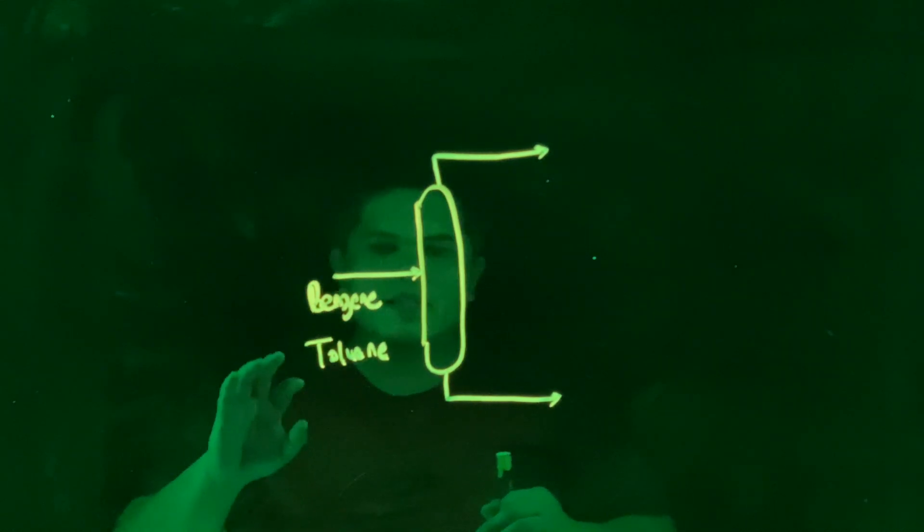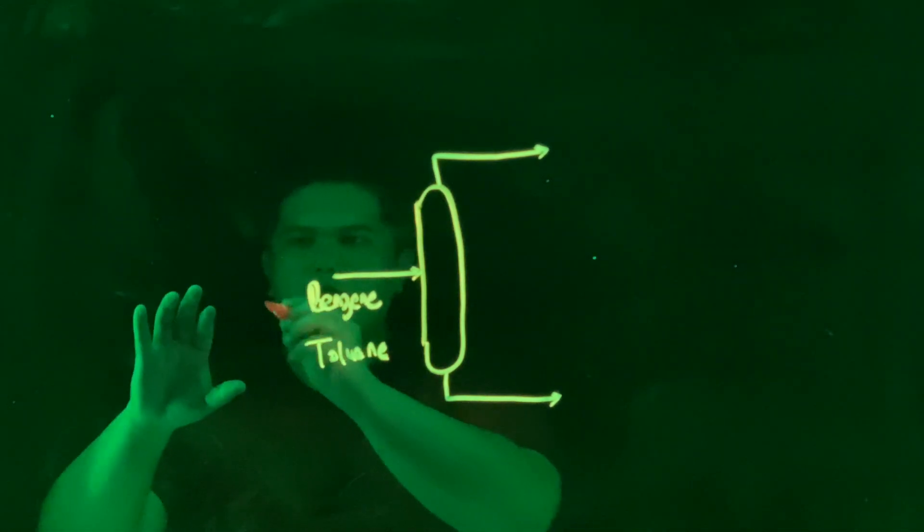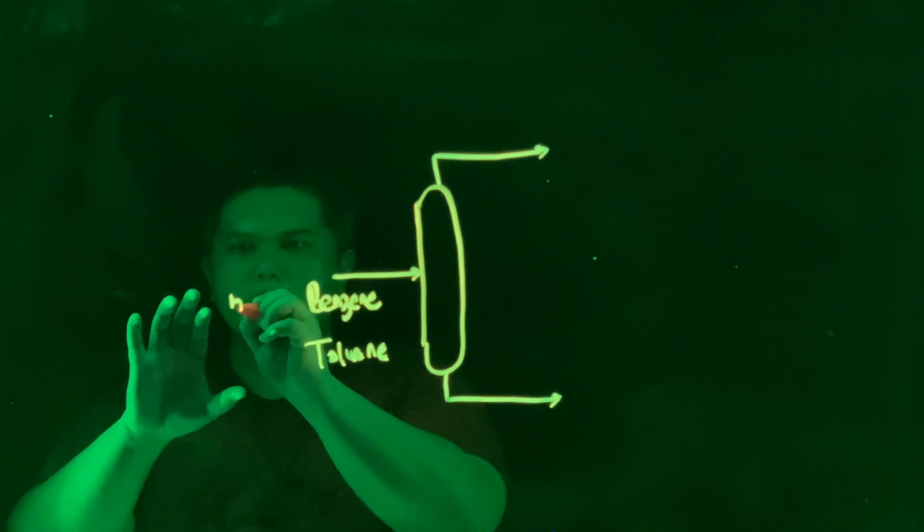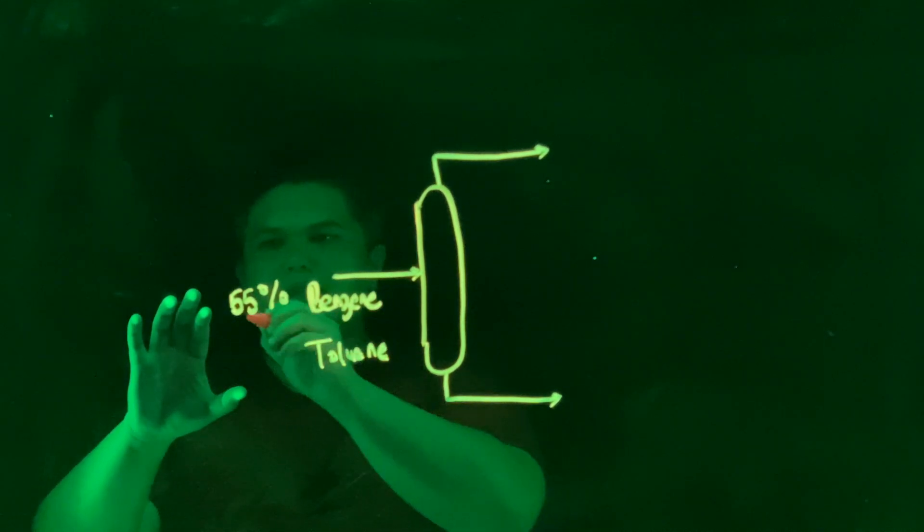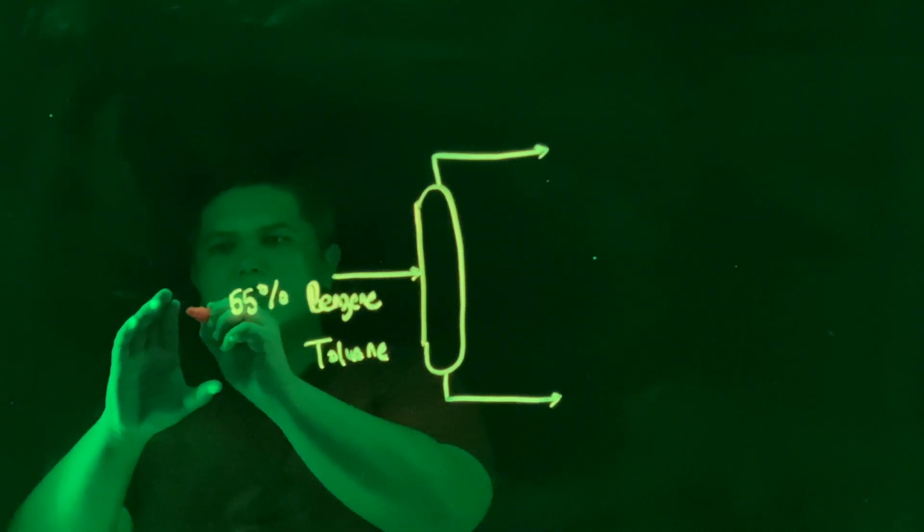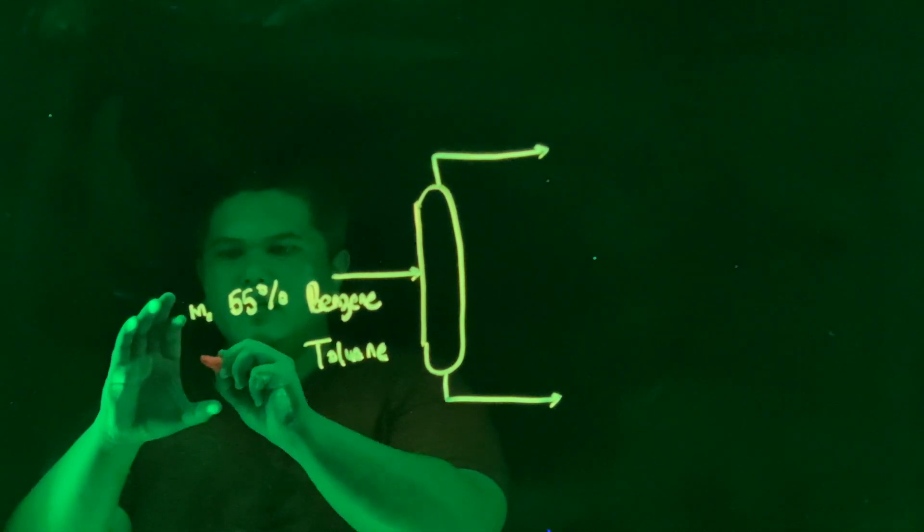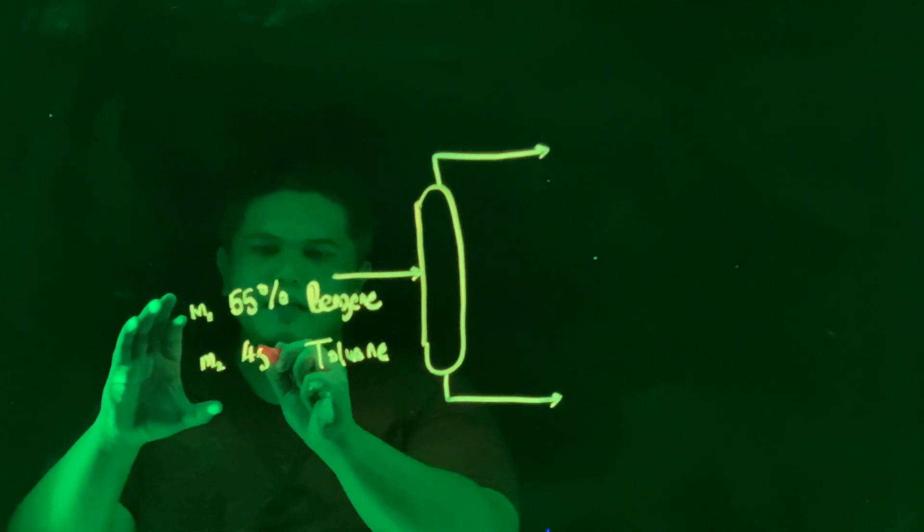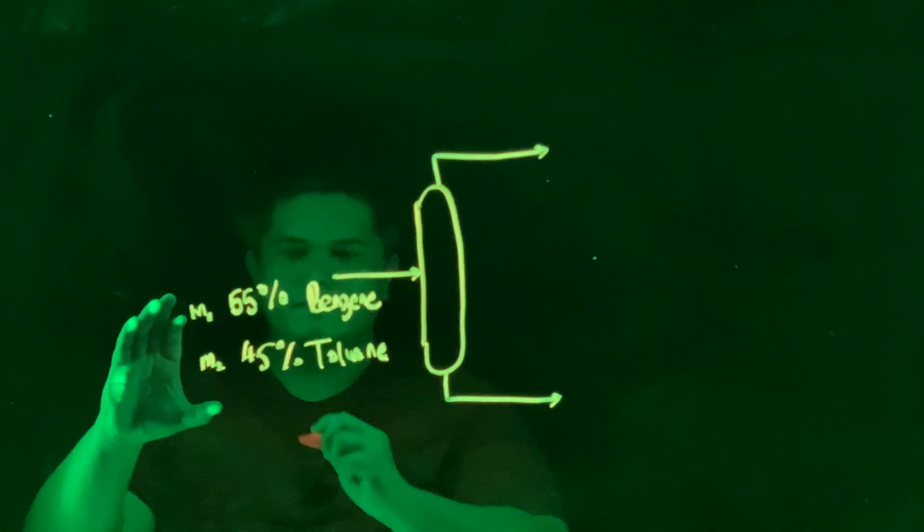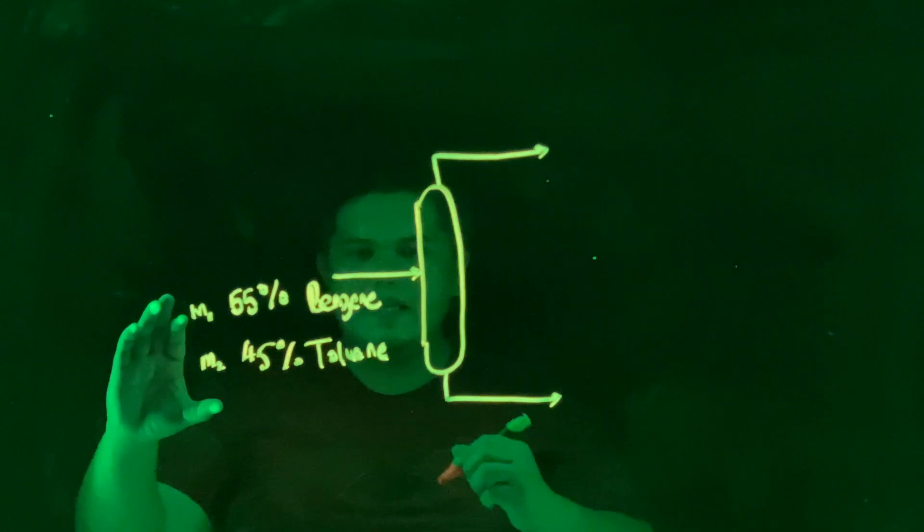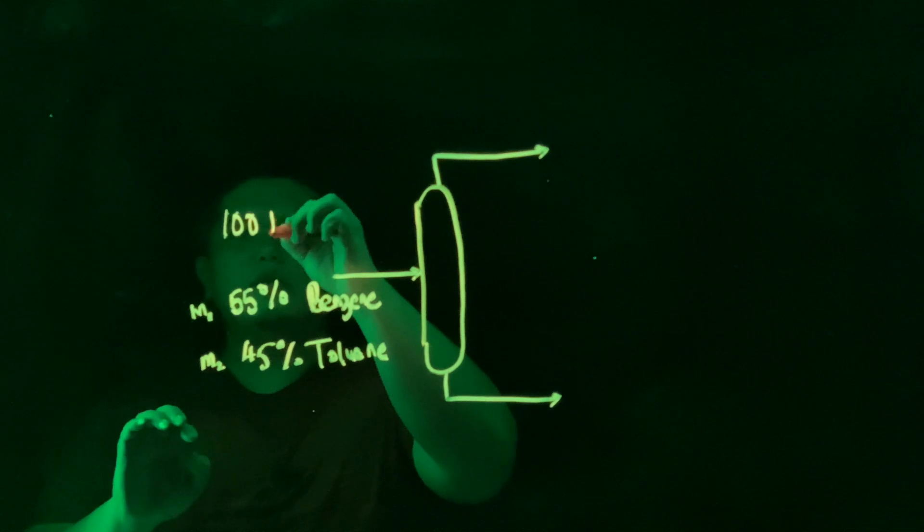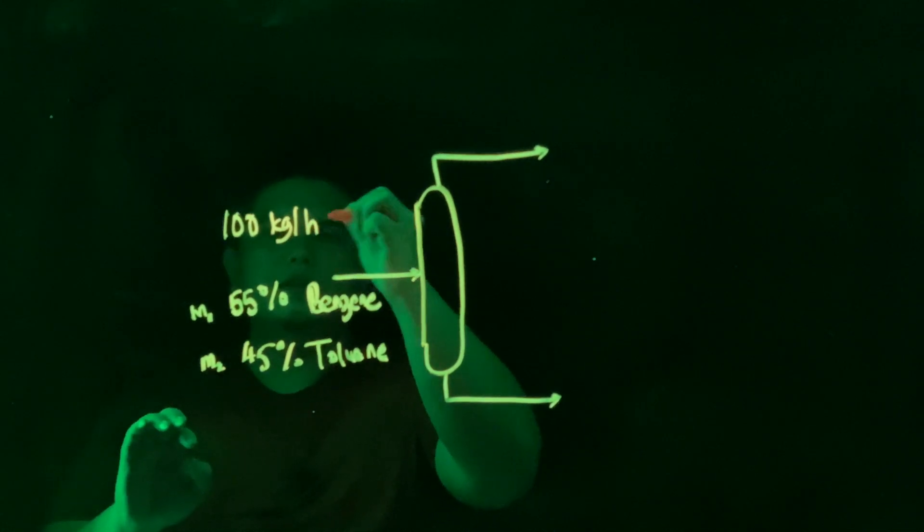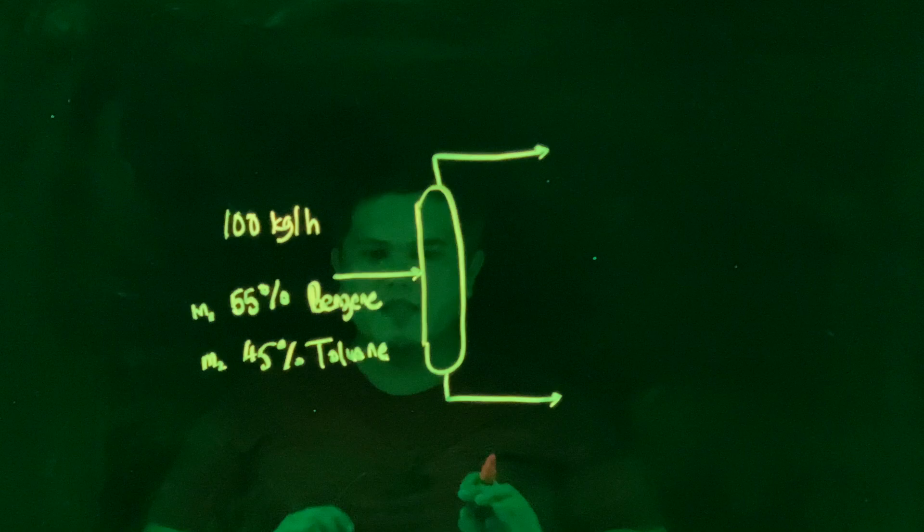A case such that there is benzene of 55 percent in terms of its mass, and toluene is 45 percent. And then they are discharged with a feed rate of 100 kilogram per hour going into the distillation column.